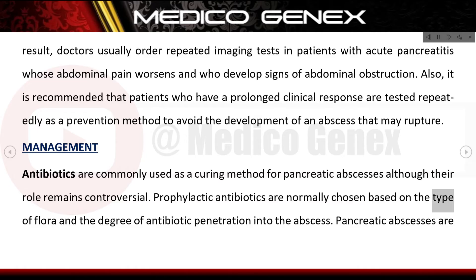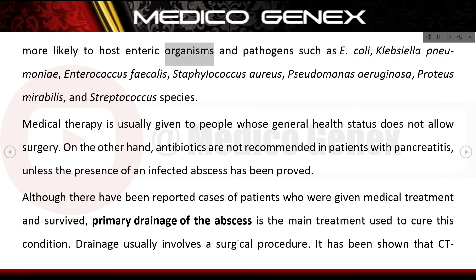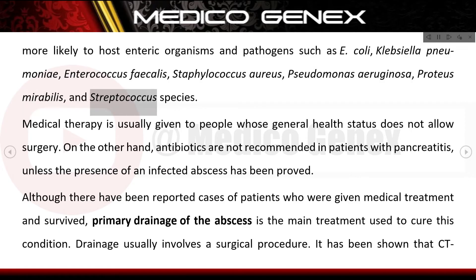Antibiotics are commonly used for pancreatic abscesses, although their role remains controversial. Prophylactic antibiotics are normally chosen based on the type of flora and the degree of antibiotic penetration into the abscess. Pancreatic abscesses are more likely to host enteric organisms and pathogens such as E. coli, Klebsiella pneumoniae, Enterococcus faecalis, Staphylococcus aureus, Pseudomonas aeruginosa, Proteus mirabilis, and Streptococcus species.